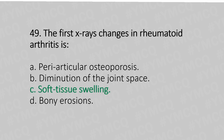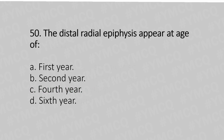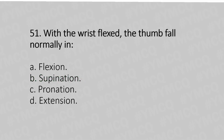Now let's move to question number 50. The distal radial epiphysis appears at the age of: option A, first year; option B, second year; option C, fourth year; option D, sixth year. And the answer is option B, second year.